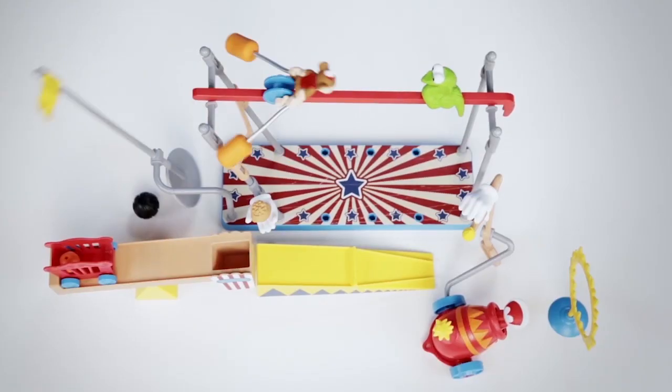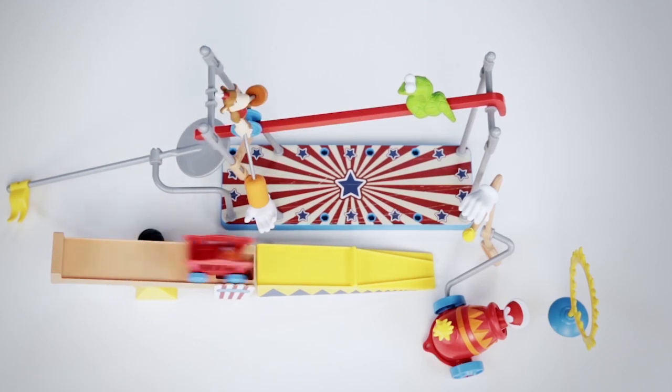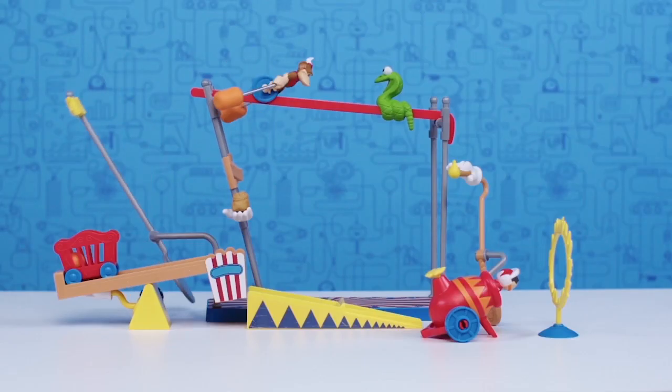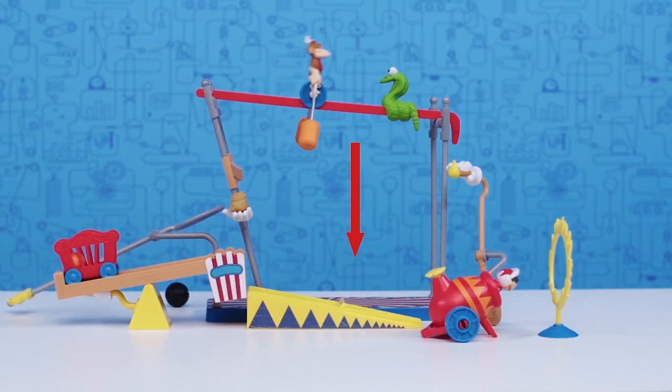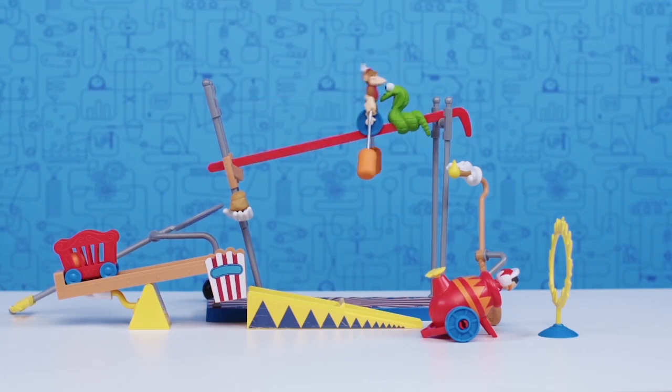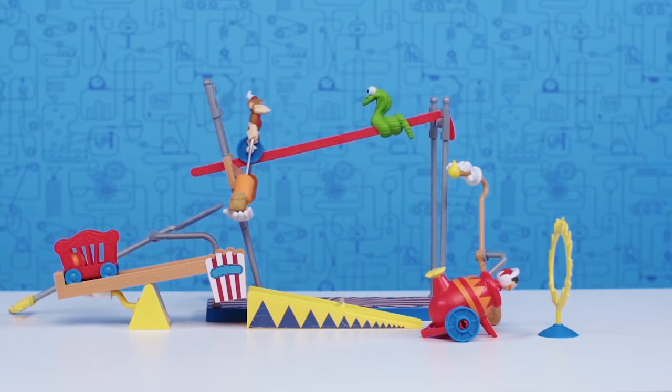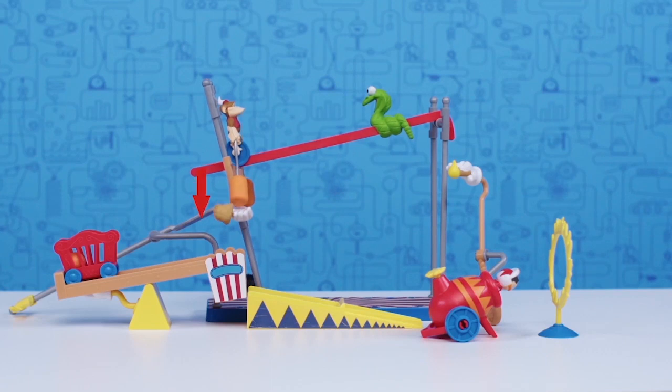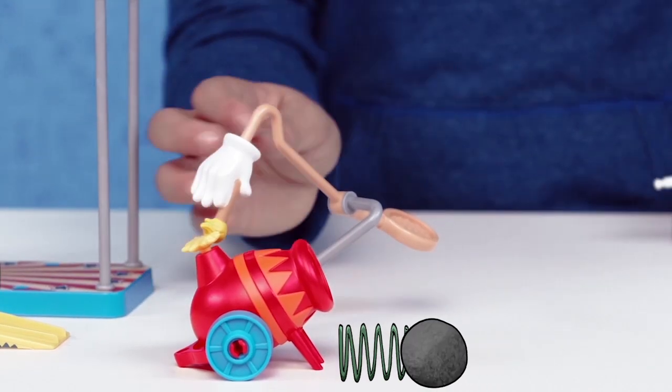So how does it work? Gravity and spring forces help to complete the chain reaction. Gravity is the invisible force that pulls everything down to the earth. It's also what makes the monkey roll down the tightrope and the peanuts fall downward. Spring forces are created when a spring is squeezed or compressed.